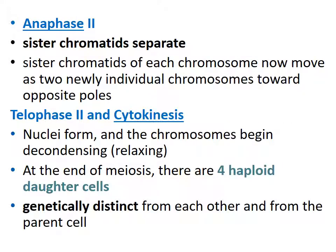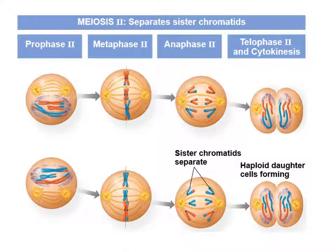In anaphase 2, the sister chromatids finally separate. Remember, in anaphase 1 the homologous chromosomes separated while sister chromatids stayed attached. In anaphase 2, the sister chromatids separate and each chromosome now moves as two newly individual chromosomes toward opposite poles. Then in telophase 2 and cytokinesis, we're essentially cleaning up the cell — nuclei form, chromosomes begin to decondense and relax. At the end of cytokinesis, we get four haploid daughter cells that are genetically different from each other and from the parent cell due to crossing over and independent assortment of homologues.